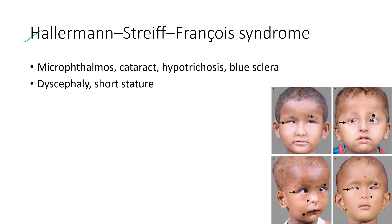Next is Hallermann-Streiff-François syndrome. The features include microphthalmia, cataract, hypotrichosis, and blue sclera. Clinical images show microphthalmia in affected cases. The systemic features include dyscephaly and short stature.